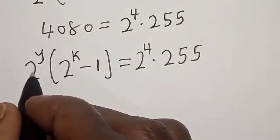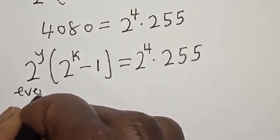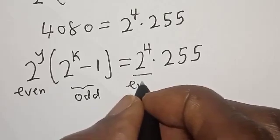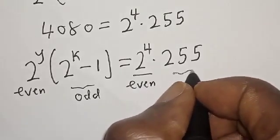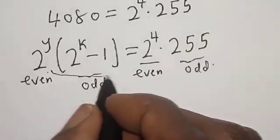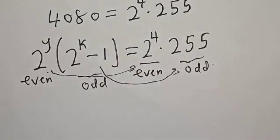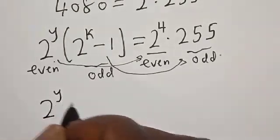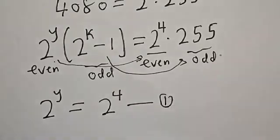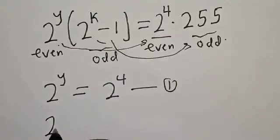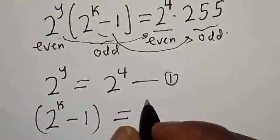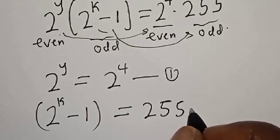Now if you look at this, 2 raised to power y is even and (2 raised to power k minus 1) is odd. Similarly, 2 raised to power 4 is even and 255 is odd. By comparing, 2 raised to power y equals 2 raised to power 4 — call this equation 1 — and 2 raised to power k minus 1 equals 255 — call this equation 2.